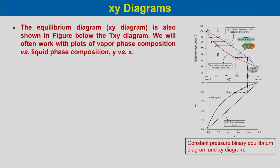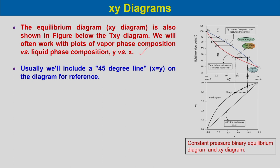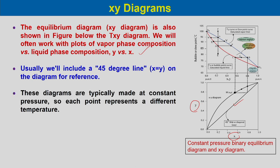We also work with the x-y diagram — a plot of vapor phase composition y versus liquid phase composition x. A 45-degree diagonal line (where x = y) is included for reference. These diagrams are made at constant pressure, so each point on the equilibrium curve represents a different temperature.